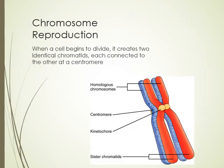When a cell begins to divide, it creates two identical chromatids. You have a single chromosome, and that chromosome reproduces itself. When does this happen? S phase — S phase during interphase. You double the amount of DNA present. They're going to be connected at the centromere, and what surrounds the centromere is the kinetochore — that belt around it.